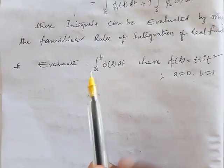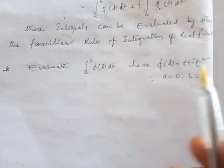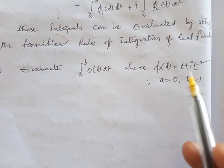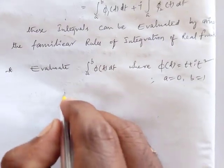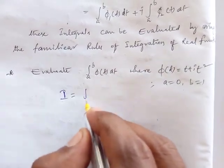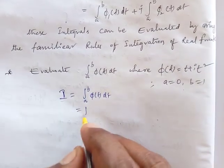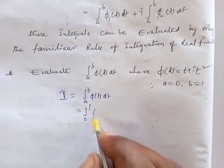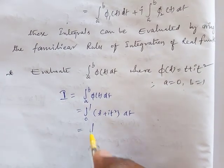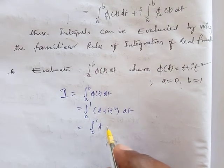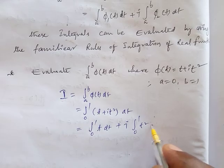Now we evaluate the integral from a to b of φ(t) dt, where φ(t) = t + i·t². Dividing into two parts, the interval is 0 to 1. The real part gives the integral from 0 to 1 of t dt, and then i times the integral from 0 to 1 of t² dt.